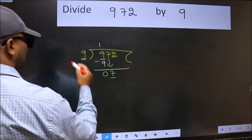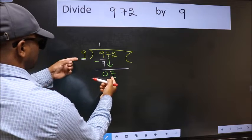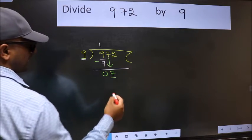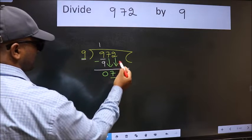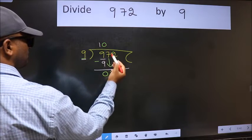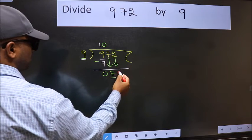7 is smaller than 9, so we should bring down the second number, and the rule to bring down the second number is we should put 0 here, then only we can bring this number down.